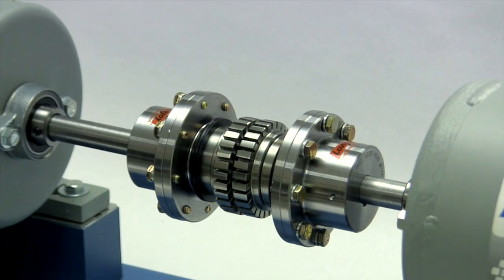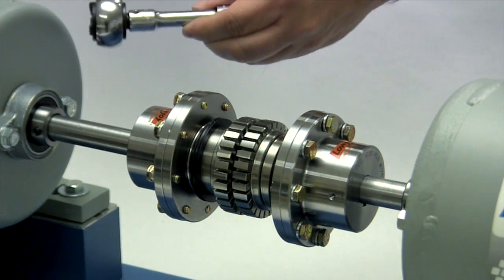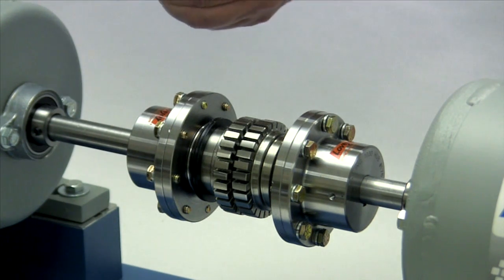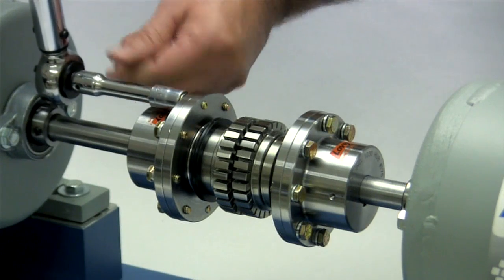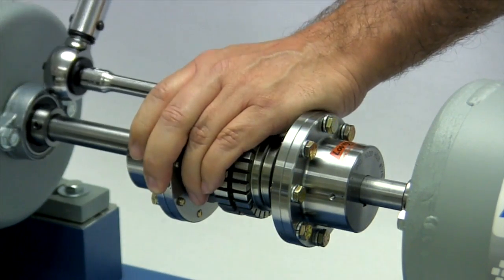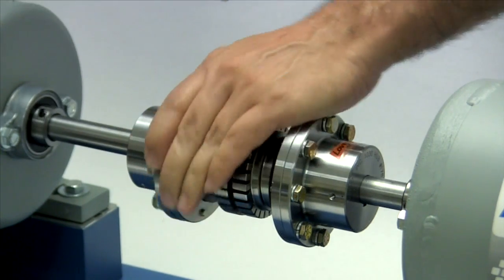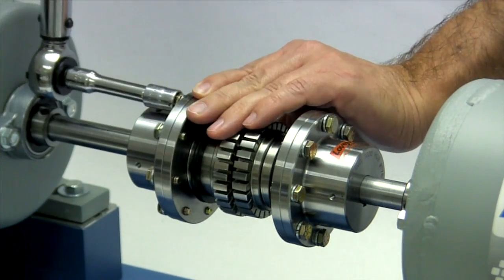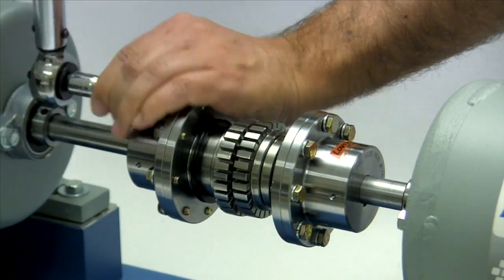When all the bolts are in place, use the industry standard procedure for tightening the bolts with a torque wrench using the values specified in the installation guide. You should tighten the bolts in a criss-cross pattern, first to 50% of the recommended torque, then 75%, then to the full torque.